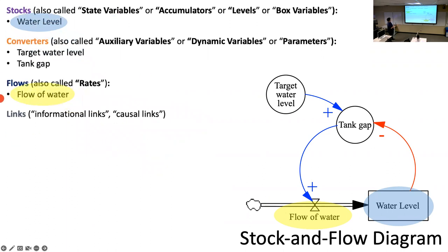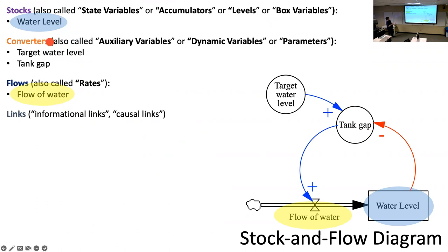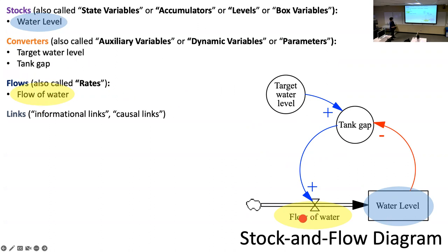To apply this to our spreadsheet template for stock-and-flow models: our stocks — water level, also called a state variable, accumulator, level, or box variable. Our converters are auxiliary variables that help make the math cleaner. Target water level is a constant 15, and tank gap is target water level minus water level. The flows are the things actually causing the water level to change — the integral under the flow is the water level, or equivalently the derivative of the water level is the flow.